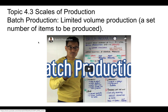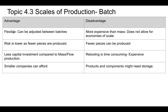Now let's look at batch production. What you're doing is making a limited volume — a set number of items to be produced. A good example is a baker who makes a batch of cookies, tastes them, and decides to add a bit more cinnamon in the next batch. You can change things between production runs, and that's a key advantage of batch production. A batch can range anywhere from a few to millions — it's a limited production run, and you can retool and reset between batches, which makes it flexible.